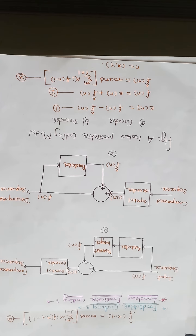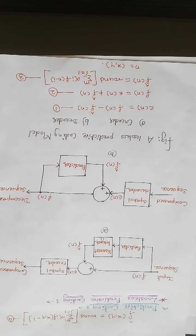We are extracting and coding only the new information in each pixel. The new information of a pixel is defined as the difference between the actual pixel and the predicted value of the pixel. So there are two kinds of predictive coding techniques: lossless predictive coding and lossy predictive coding.